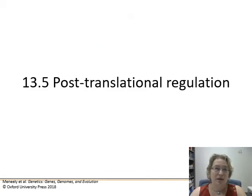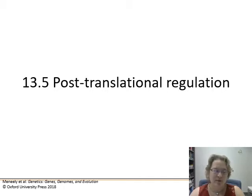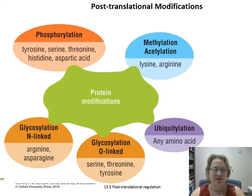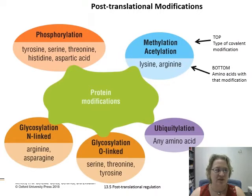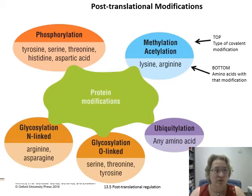Next up: post-translational regulation. What happens after we make our amino acid chain? There are five main types of post-translational modifications. In this figure, the top gives the name of the modification and the bottom shows which amino acids tend to have that modification applied to them.